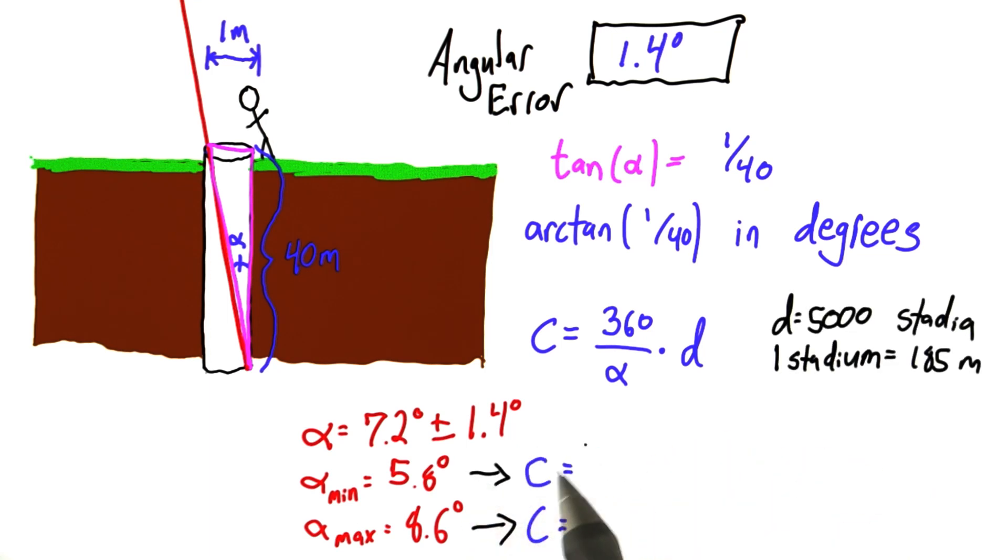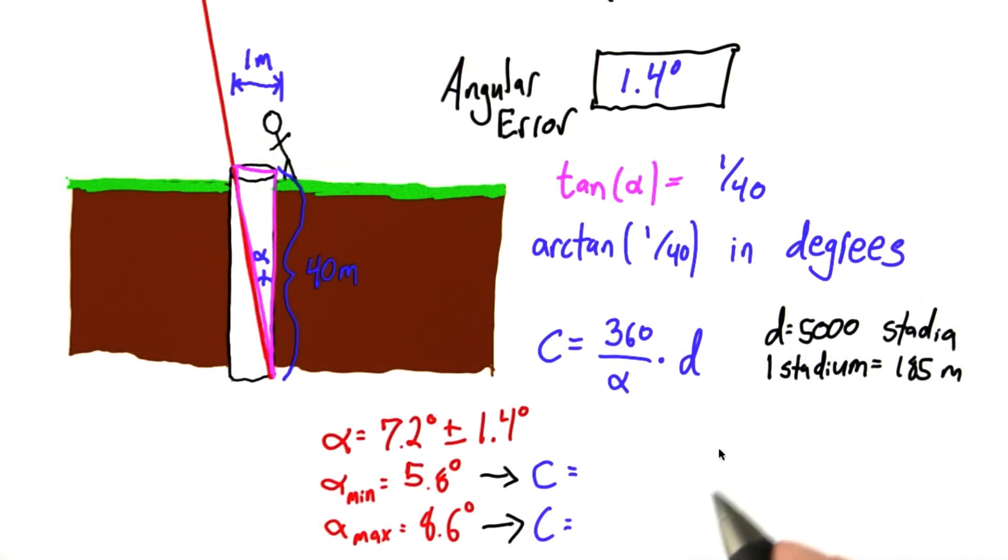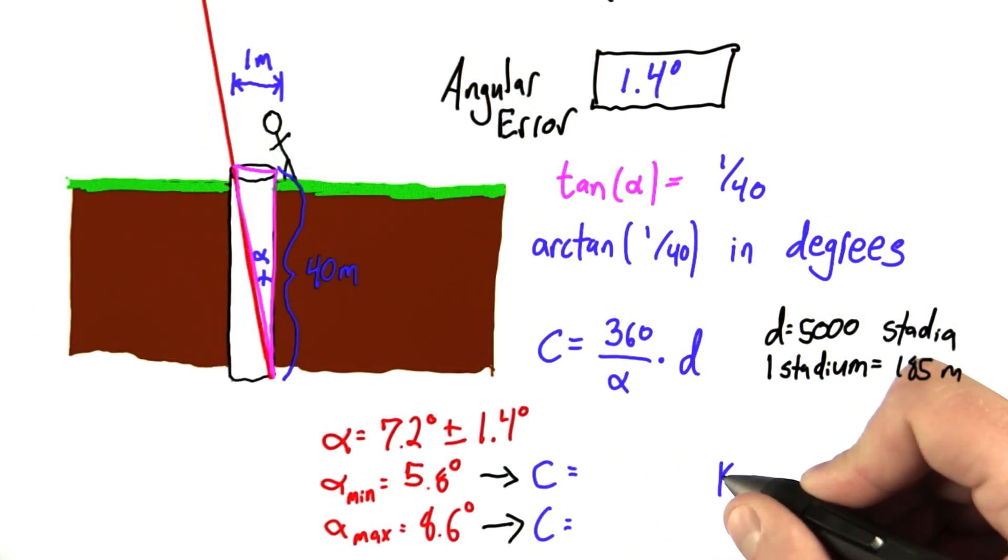So I want you to enter in two new calculations for the circumference. And I want you to use the d we know from before, which is 5,000 stadia. That's the distance between Siena and Alexandria. And remember, the stadium is 185 meters. And I want you to use alpha min to calculate a circumference, and use alpha max to calculate a circumference. And enter those numbers here. Remember, we want to keep our answers in kilometers.